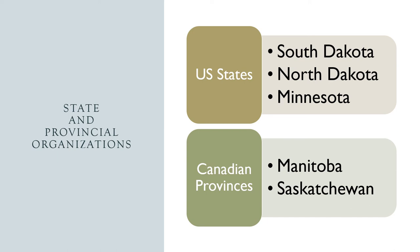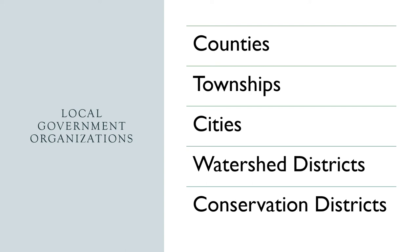Fortunately, all these different state organizations tend to work well together at the individual staff level and within the larger organizational context. Saskatchewan is included on the list because the Assiniboine River, which starts in Saskatchewan, drains into the Red River. Below the state government level, there are a host of local government entities that have jurisdiction wholly or partially within the Red River Basin.